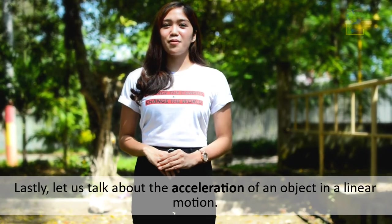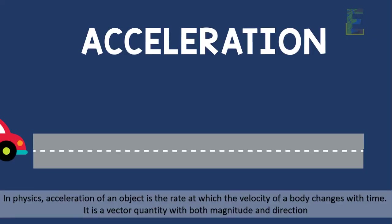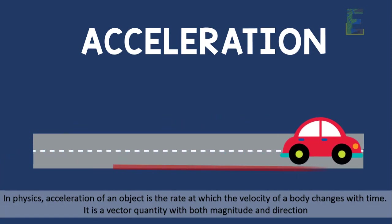Lastly, let us talk about acceleration of an object in a linear motion. In physics, acceleration of an object is the rate at which the velocity of a body changes with time. It is a vector quantity with both magnitude and direction.